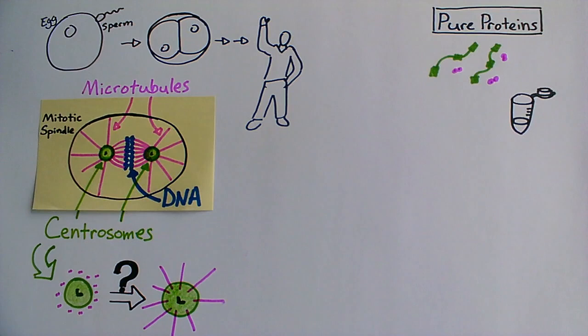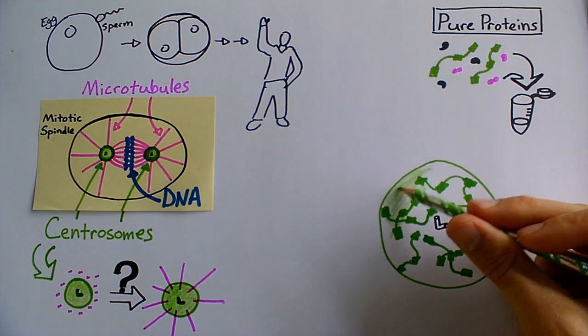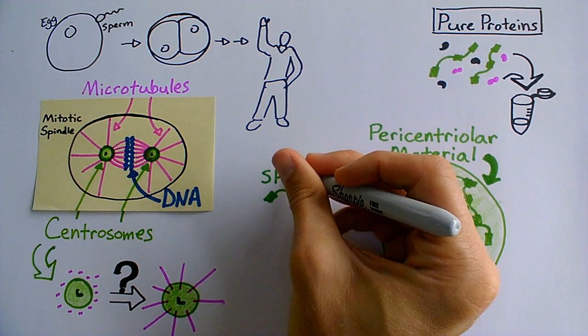We found that the outer layer of the centrosome, called pericentriolar material, is a sponge-like scaffold made up of the protein SPD-5.